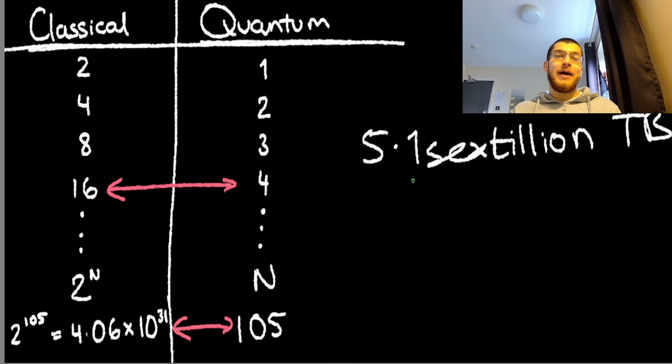For reference, the current storage capacity of all the devices in the world combined is around 34 million times less than that.